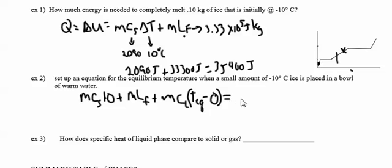C of the liquid, and then delta T. We don't know the equilibrium temperature, but let's assume we know the initial temperature minus the equilibrium.